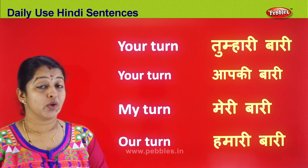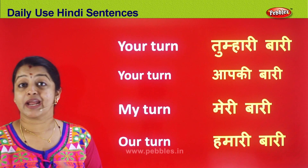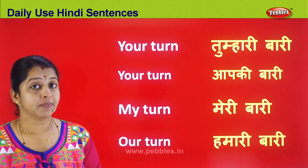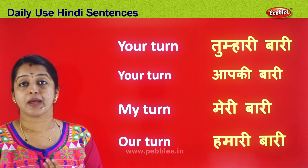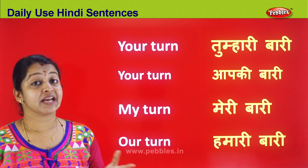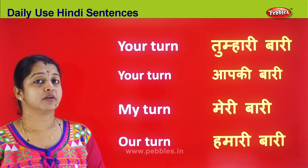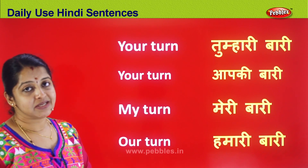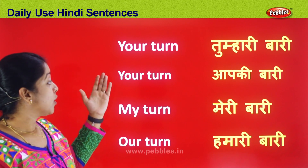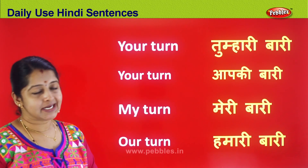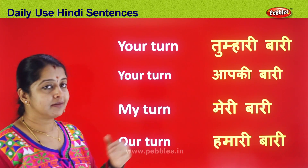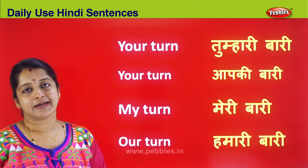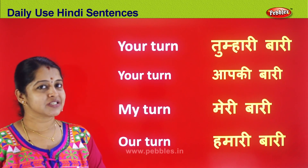Let's recap: when addressing someone in a friendly ambience, say Tum/Tumhari. When addressing someone in a social gathering with elders or formal colleagues, say Aap. When saying something for yourself, say Main/Mera/Meri. When representing as a team — we, us, our — say Hamari. So: 'your turn' friendly = Tumhari Bari; formal = Aap ki Bari; 'my turn' = Meri Bari; 'our turn' = Hamari Bari.